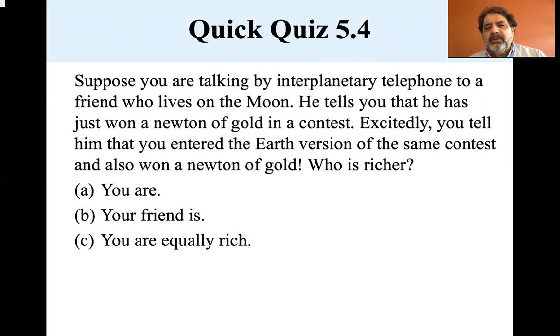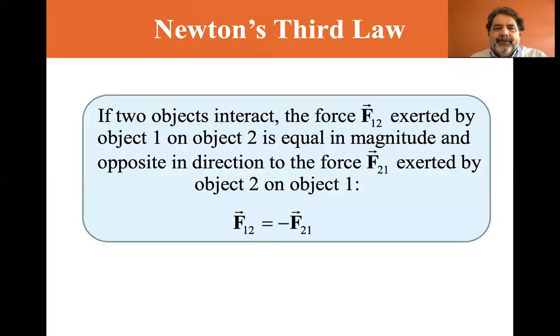Okay, suppose you're talking by interplanetary telephone to a friend who lives on the moon. He tells you that he has just won a newton of gold in a contest. Excitedly, you tell him that you entered the earth version of the same contest and also won a newton of gold. Who's richer, you, your friend, or is it the same? Is one newton on the earth the same as one newton on the moon? Well, no, they're not. Since the gravitational force is only one-sixth of what it is on the earth, you need more mass to make up one newton, so your friend is actually richer. The one newton reward that he won is much more mass just to get that one newton, because gravitational force is less.